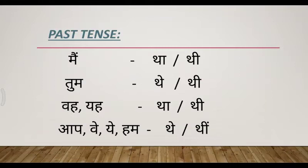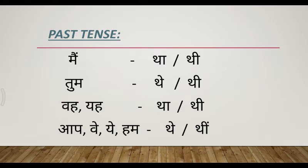In past tense helping verb there are four forms. Let's see how they are used. First person singular — that means 'main' — if you want to use tha or thi: main ghar mein tha means 'I was in the house.' Suppose a girl says: main ghar mein thi — same meaning, 'I was in the house.' Suppose for temple: main mandir mein tha. For feminine: main mandir mein thi.